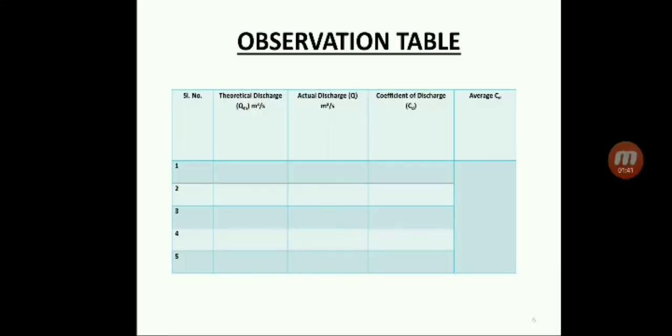The observation table is plotted where we put the values of theoretical discharge and actual discharge and calculate the coefficient of discharge. From the coefficient of discharge we can easily find the average coefficient of discharge, which is the required result.